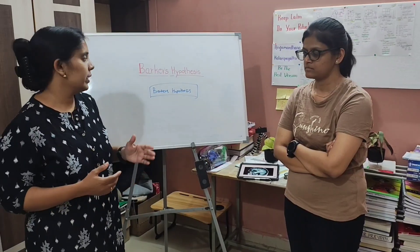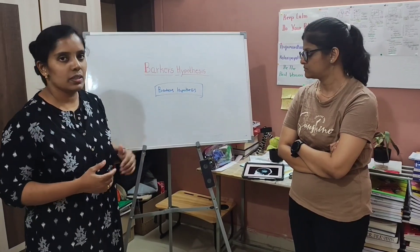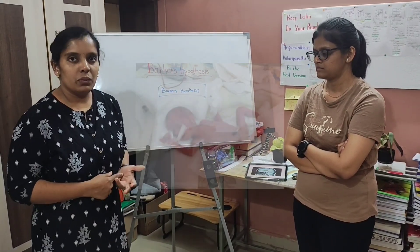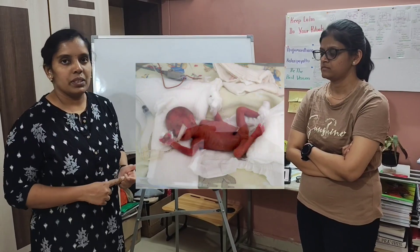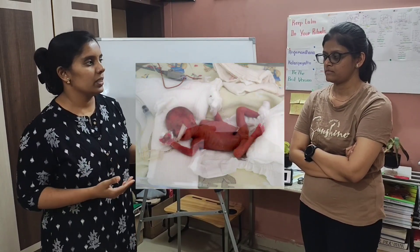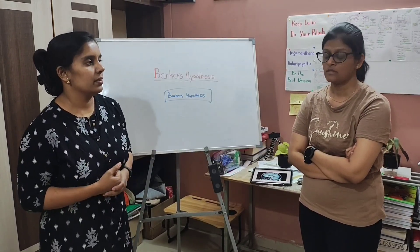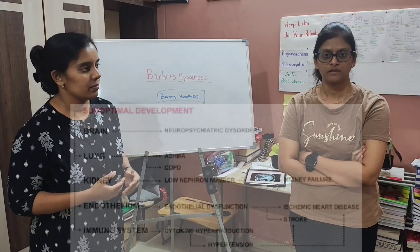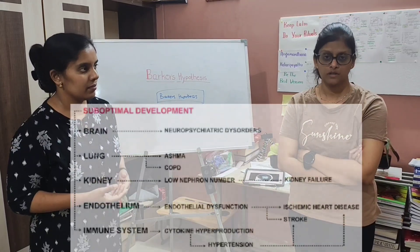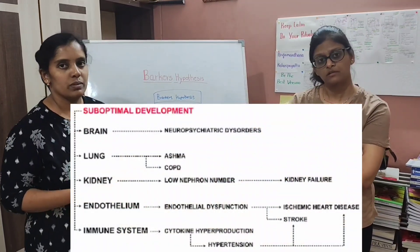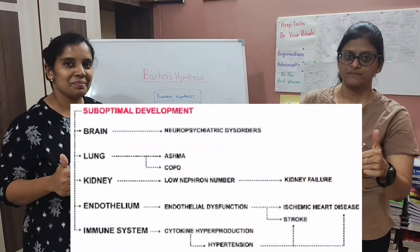Regarding the clinical implications of Barker's Hypothesis, low birth weight infants, preterm infants, and IUGR babies are more prone to adult-onset diseases such as type 2 diabetes, hypertension, coronary artery disease, obesity, and stroke.